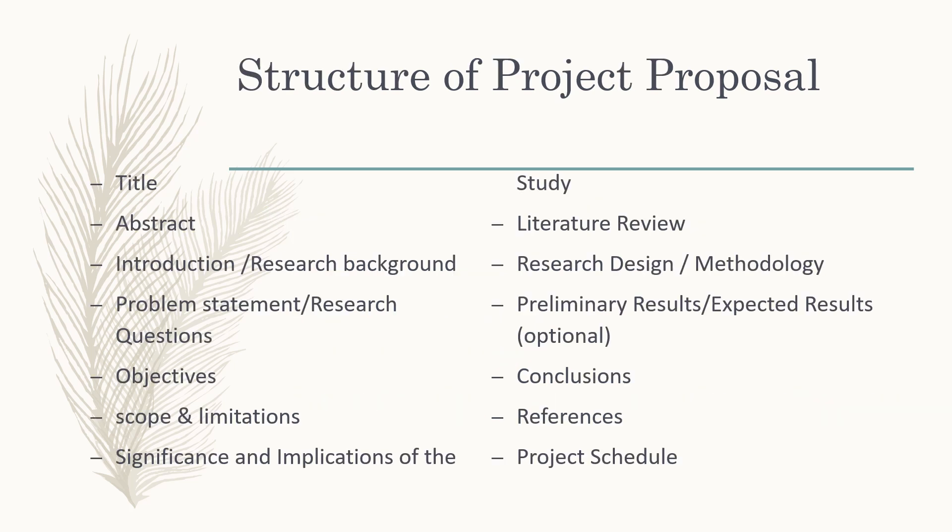The structure of a project proposal may include: the title, abstract, introduction or research background, problem statement or research questions, objectives, scope and limitations, significance and implication of the study, literature review, research design or methodology, and preliminary or expected results. This last part is optional — if you have preliminary results you can include them, otherwise you write down your expected results. After that, you make conclusions, list all references used, and include your project schedule.